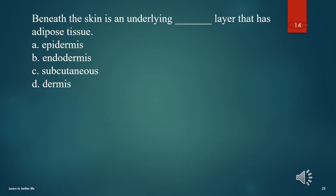Beneath the skin is an underlying what layer that has adipose tissue? A. Epidermis. B. Endodermis. C. Subcutaneous. D. Dermis. The answer is C. Subcutaneous.